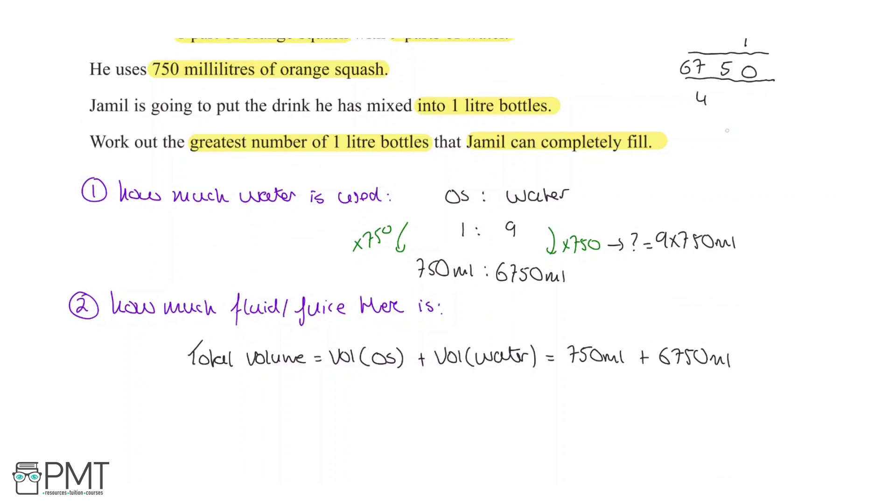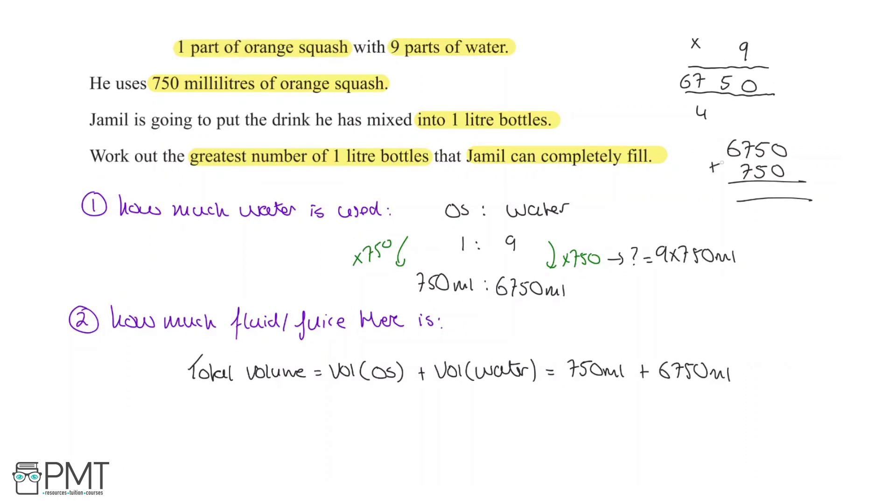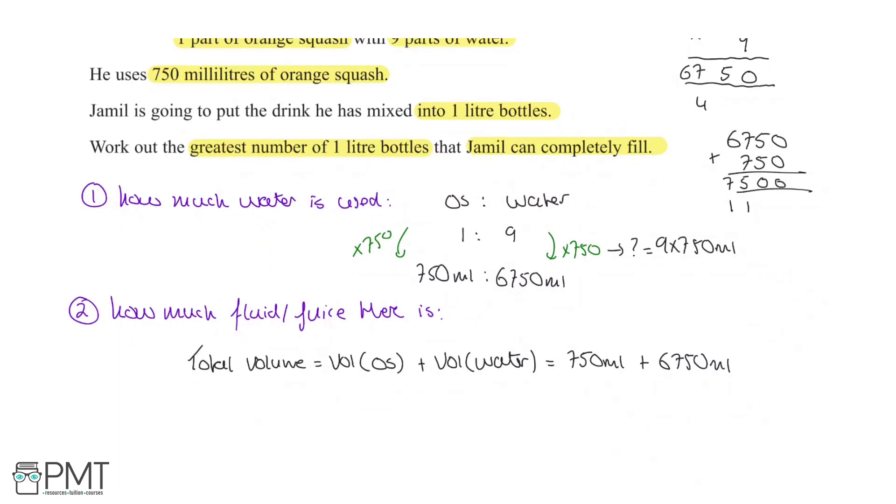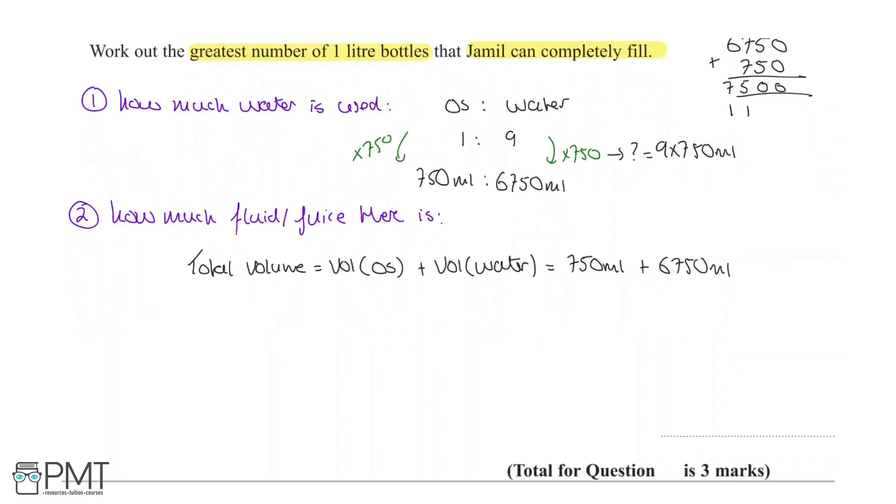In the corner here, I'm just going to add these using column addition. So 6,750 plus 750. Zero plus zero is zero. Five plus five is 10, zero carry the one. Seven plus seven is 14, plus the one is 15, five carry the one. Six plus one is seven. So we're going to have 7,500 millilitres of total volume.